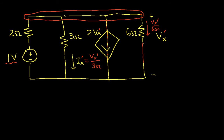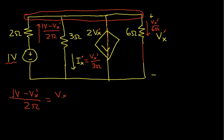We also need the current entering the top node through the 2-ohm resistor, which is the voltage difference across it: 1 volt minus Vx prime, divided by 2 ohms. Now we use Kirchhoff's current law — sum of currents entering equals sum leaving — so: (1V − Vx prime)/2Ω = Vx prime/3Ω + 2·Vx prime + Vx prime/6Ω.